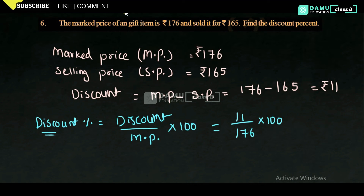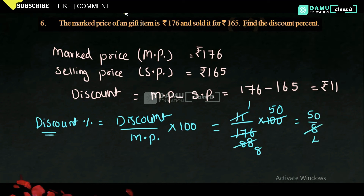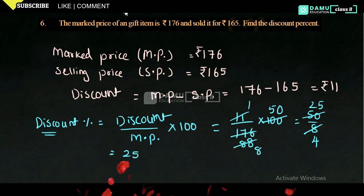Now we divide. We get 1100 divided by 176. Dividing both by 2 gives 550 by 88. Dividing again by 2 gives 275 by 44. Simplifying further gives 25 by 4.